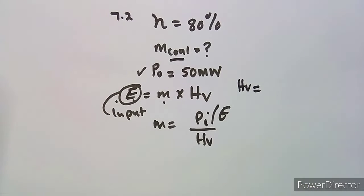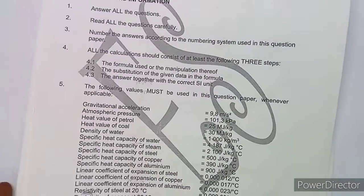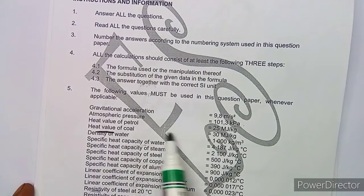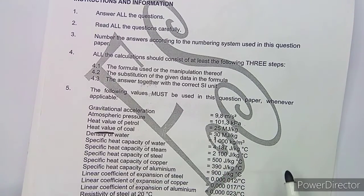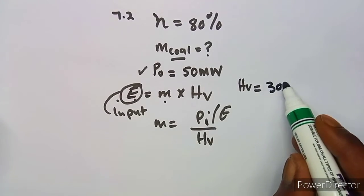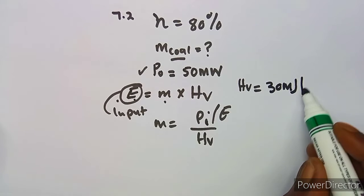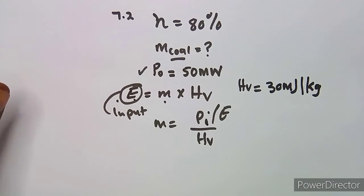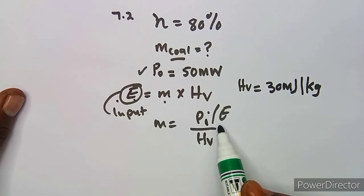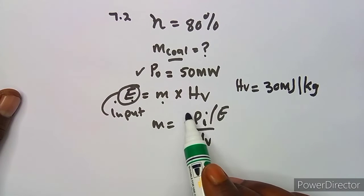We need the heat value of the fuel, which is coal. The heat value of coal is 30 megajoules per kg. So we have 30 MJ/kg. We first need the input power, which we obtain from the efficiency.